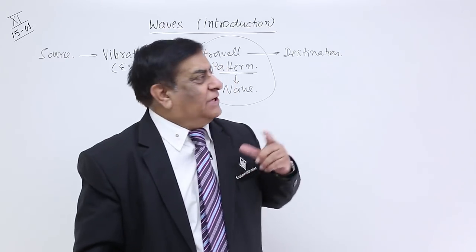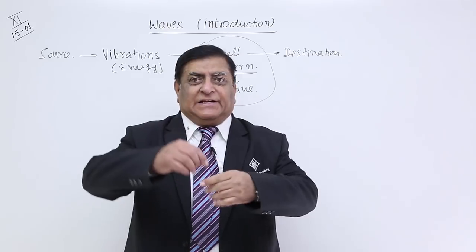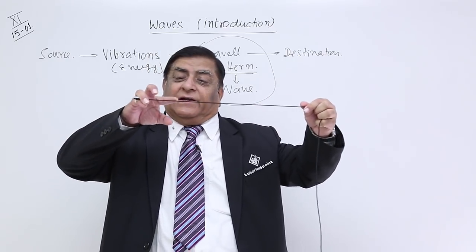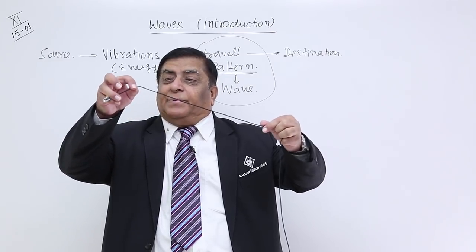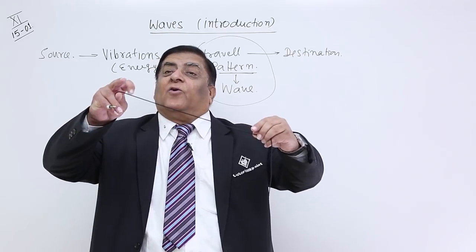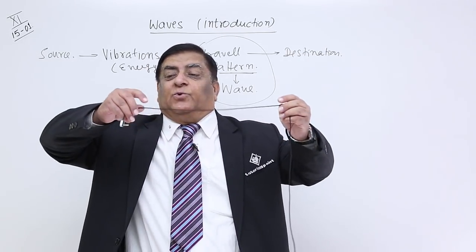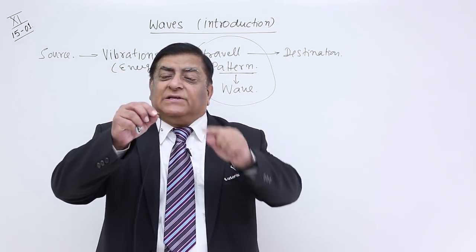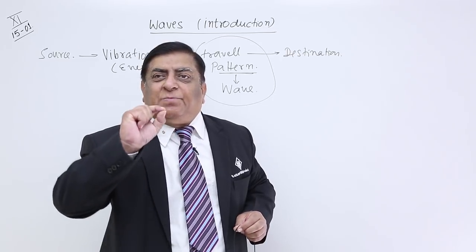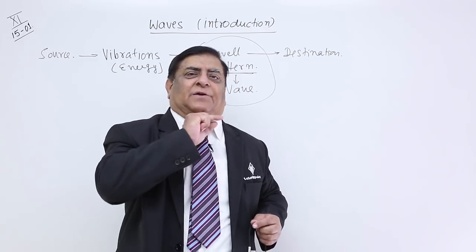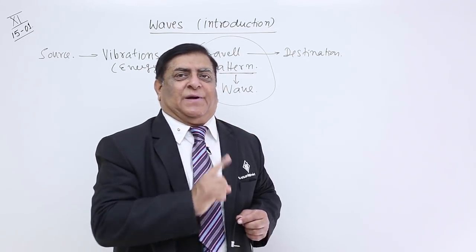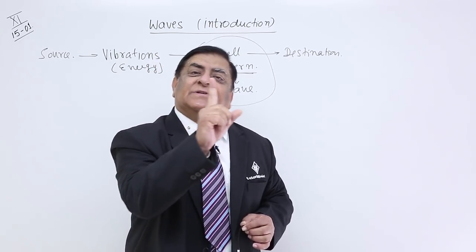What happens in a wave? How does transmission take place for a vibration? See here, if I am lifting one small particle here, what is happening to the neighboring particle? It also goes up. What is the need of the neighboring particle to go up when I am lifting only this particle? The answer is: because there is an intermolecular force between all of them. When we displace one particle, due to that force, it also disturbs the other particle. That disturbance is given to the next particle, and when the next particle is disturbed, it gives disturbance to the next one.